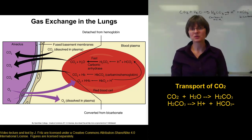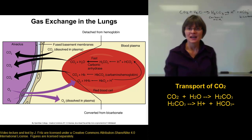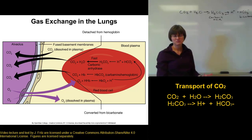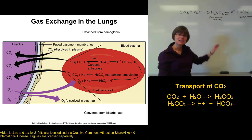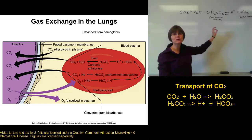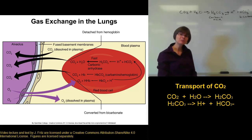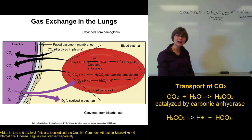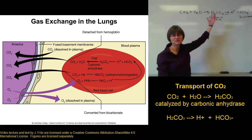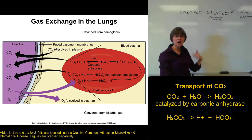One last thing: carbon dioxide will normally combine with water to make carbonic acid. This doesn't take energy and will happen even without an enzyme, but it happens a lot faster with one. Our red blood cells contain an enzyme called carbonic anhydrase, which catalyzes this reaction, so carbon dioxide and water are converted to carbonic acid very quickly in our blood.